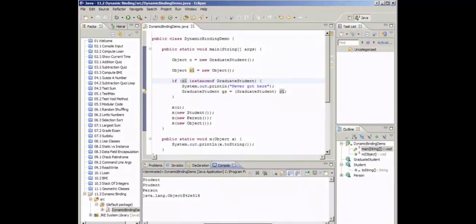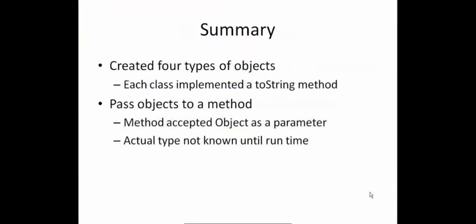So, that's it for this video. To summarize: we created four types of objects, each class implemented a toString method, and we passed these objects to a method that accepted an object type as its parameter. The actual type passed in wasn't known until runtime — that's what dynamic binding is all about: delaying decisions until the program runs. Thanks a lot.